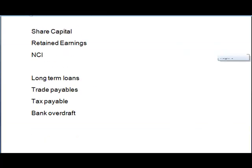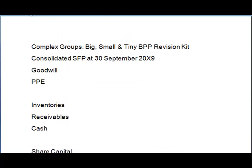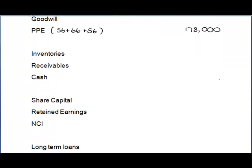The first item is PPE. PPE is not cross-referenced to anything, so we simply add 56 plus 66 plus 66. There are no fair value adjustments — unusual, as the examiner tends to like those — giving us 178. Next we have investments, which are referenced to notes 1 to 3, so we'll leave those figures until we reach those notes.